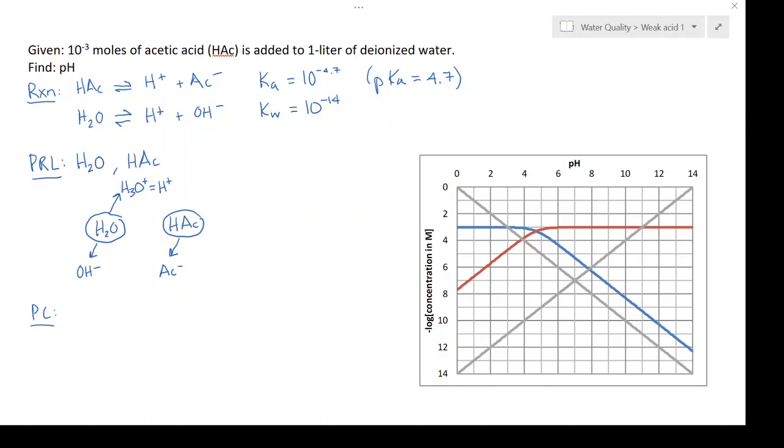These are our proton gainers and these are our proton losers. The proton condition will be my proton gainers set equal to the proton losers.